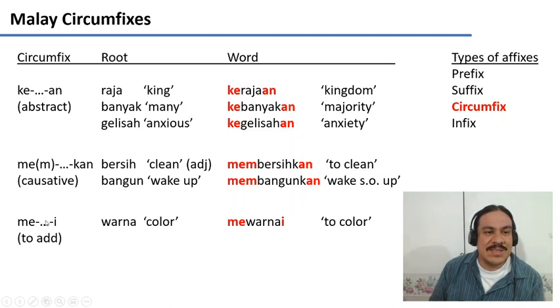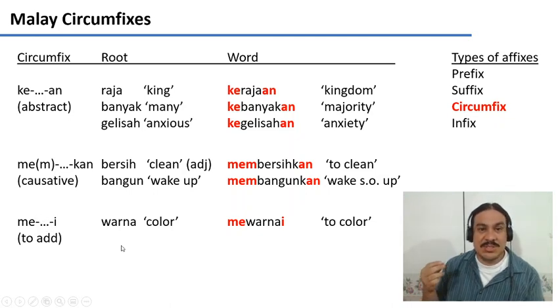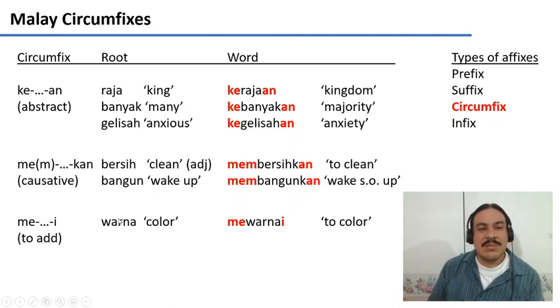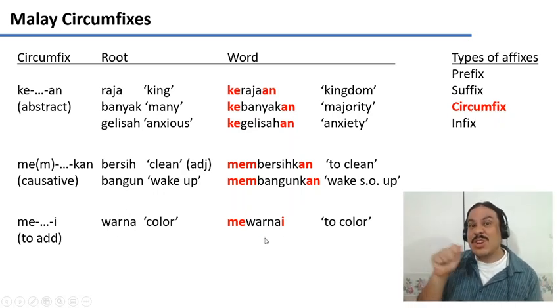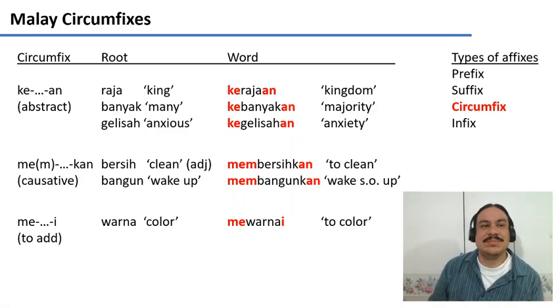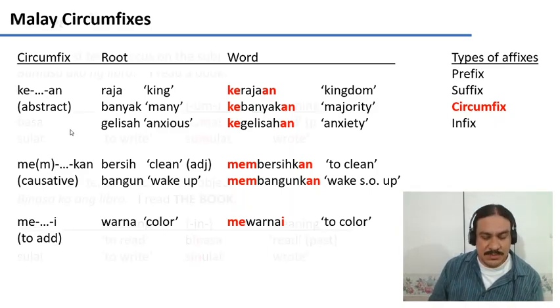There's also the circumfix 'me-...-i,' which means to add something. So we have the root 'warna' meaning color, and 'mewarnai' means to add color to something — to color. So circumfixes go around the root.